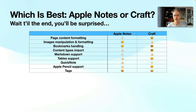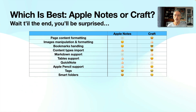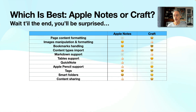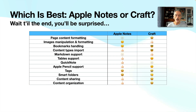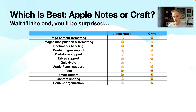Tags are not supported in Kraft, so if that's important to you for content organization, Apple Notes is a big win. For smart folders, a few are available in Kraft but you cannot create your own, which you can do in Apple Notes based on tags. For content sharing, Apple Notes is good but Kraft is a bit better. Content organization is again better on the Kraft side because you can group documents within folders or subfolders, something you cannot do in Notes, which is limited to one level of folders.